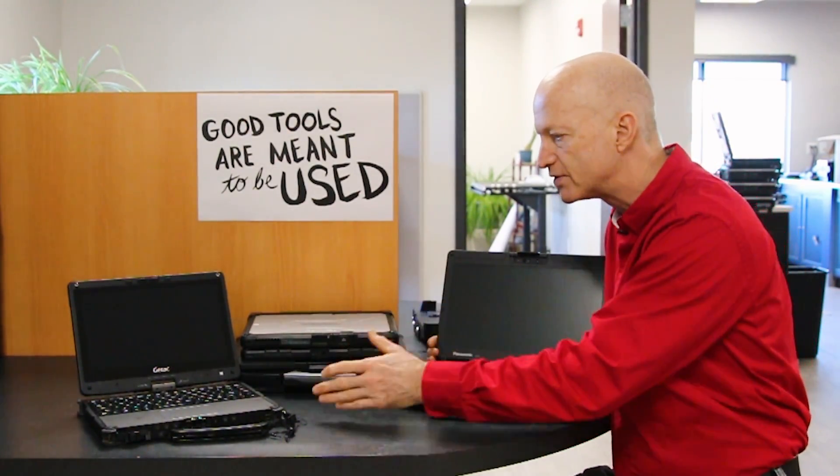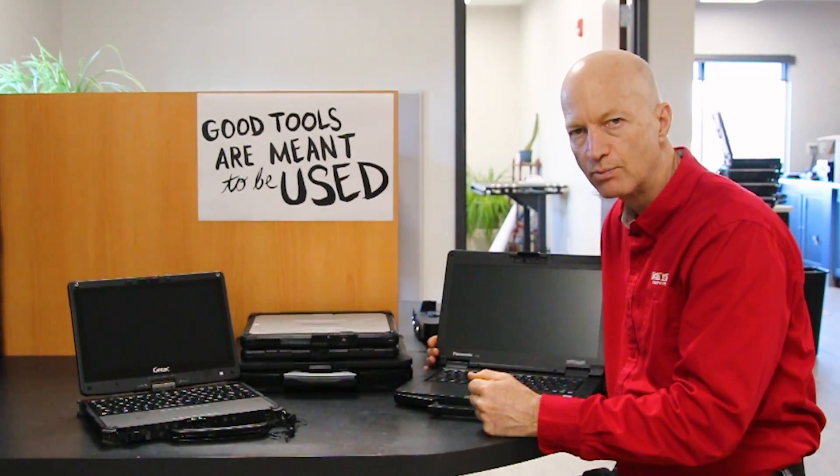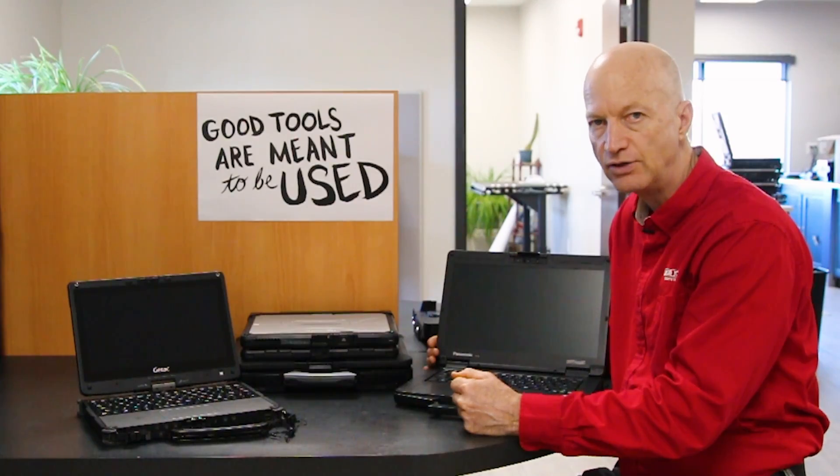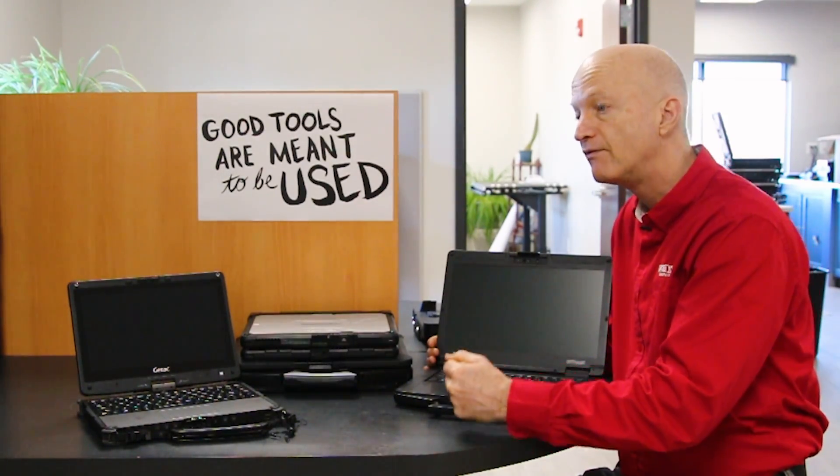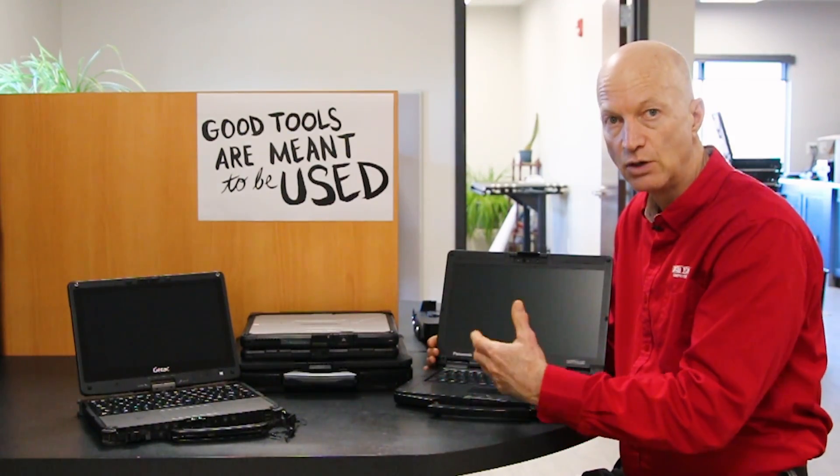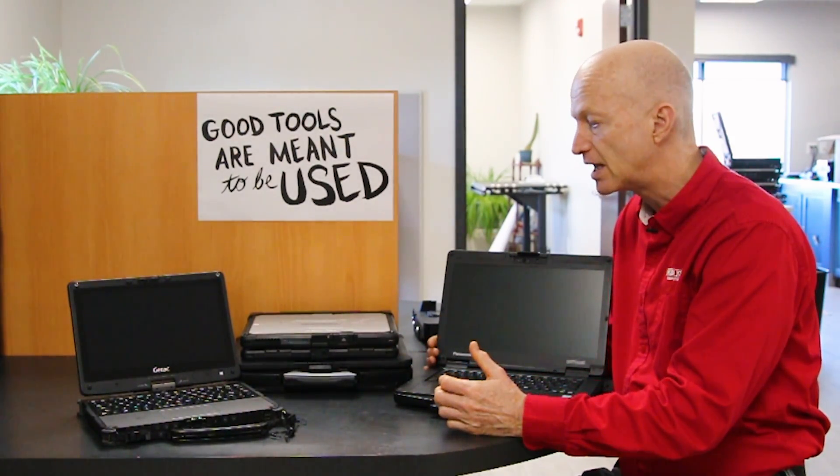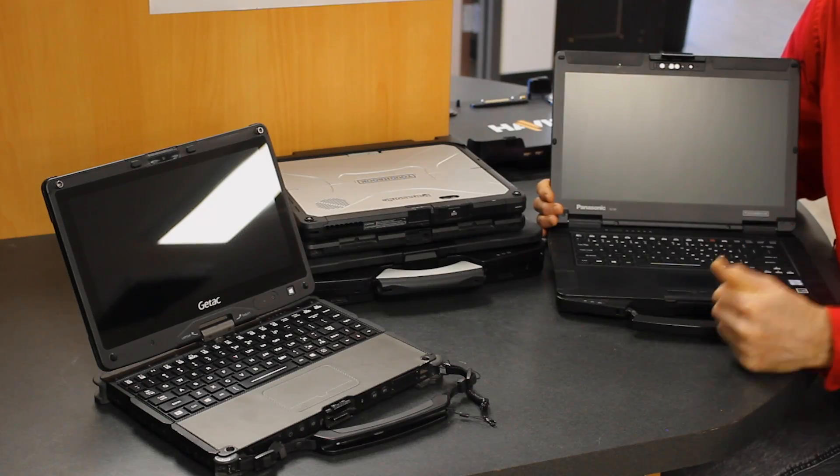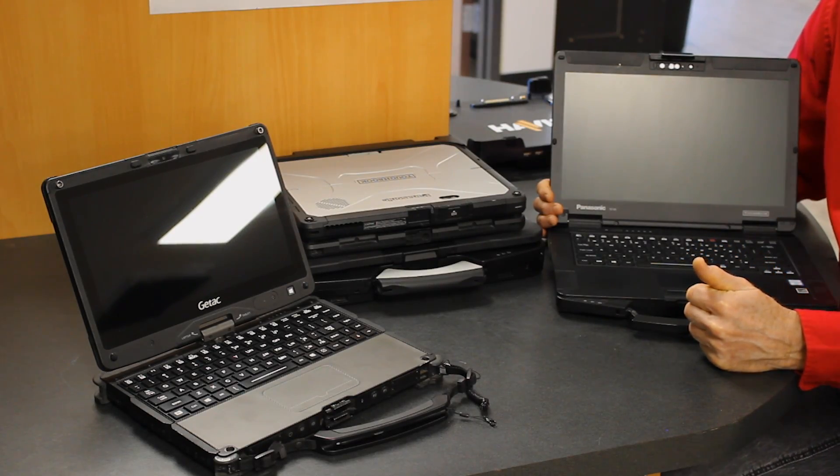Don't get caught up in all of the specifications. Check the software that you're running. Whatever that specific software is that you need this machine to run, find out the recommended specs and find out which unit will fit your specifications that you need. One is not better than the other unless it doesn't fit into your software requirements.